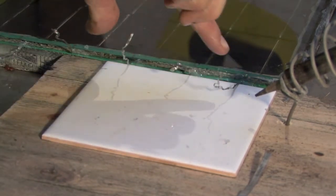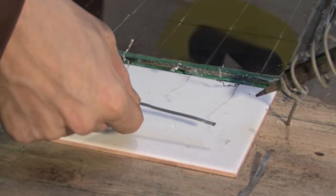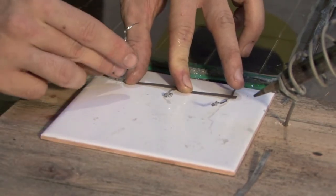To do that, I'm going to use bus bar, which is a thicker wire, just because I've got it lying around. But you can also simply use the tabbing wire that you've been using to make the rest of the panel.